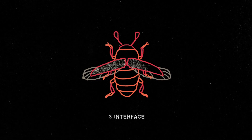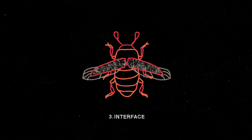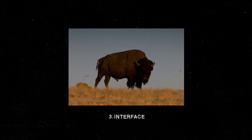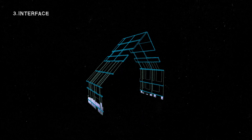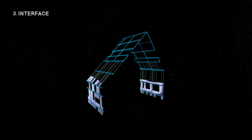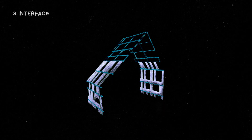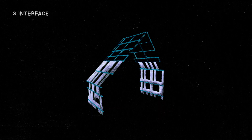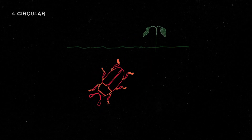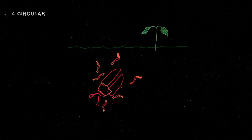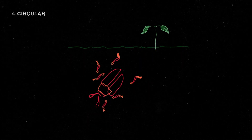Interface — like the wings of a beetle or thick hair on a bison, a building protects itself from its external environment and creates spaces for social comfort. Circular — the circular flow of life.